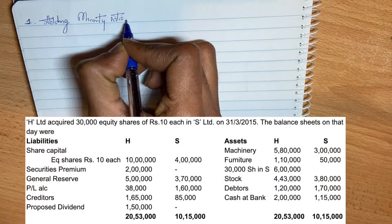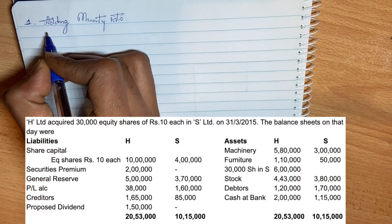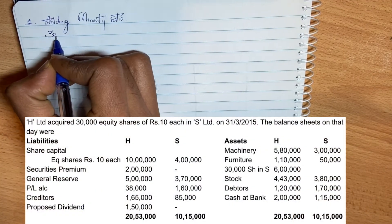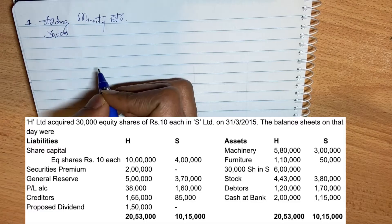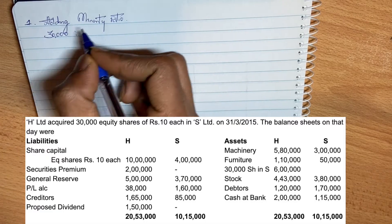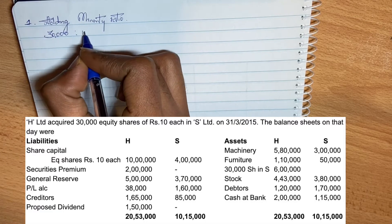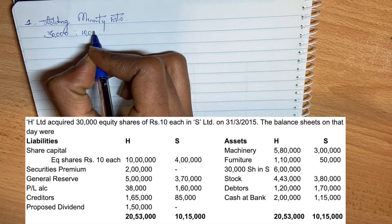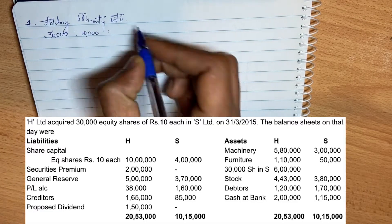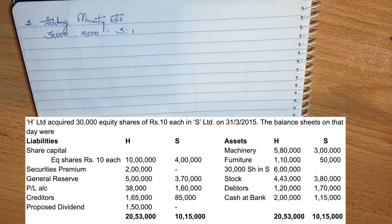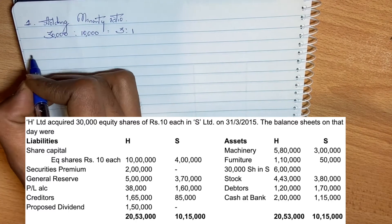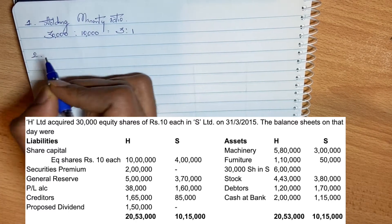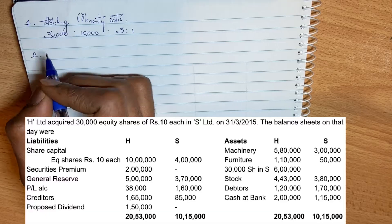First step is holding-minority ratio. The holding company acquired 30,000 shares. Total shares is 40,000, so minority shareholders hold 10,000 shares. This gives a ratio of 3 to 1, that is 30,000 to 10,000.